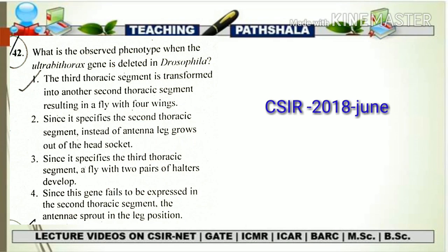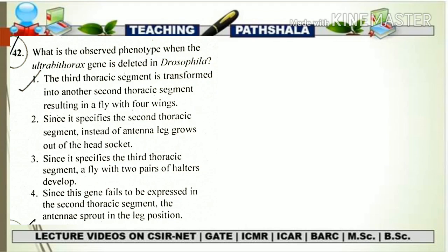Hello everyone, I hope you all are doing well. In this video, we are going to talk about one question that has been asked in CSIR-net 2018 June, that is the previous attempt. This question was from the homeotic selector genes from the Drosophila developmental biology. So let's see the question first: what is the observed phenotype when the ultrabithorax gene is deleted in Drosophila?